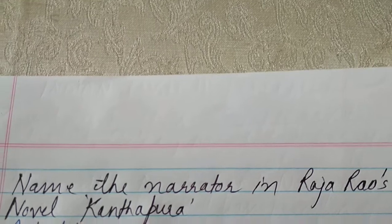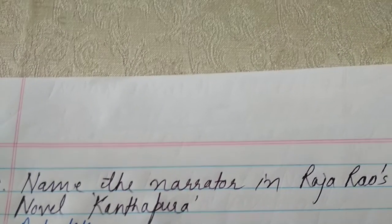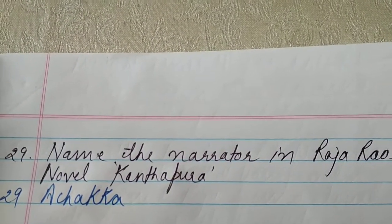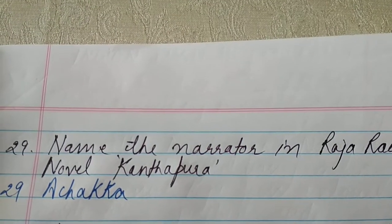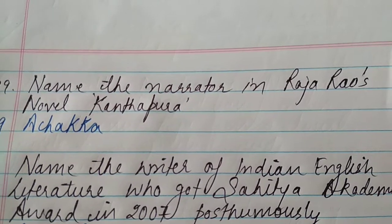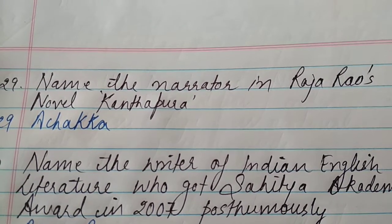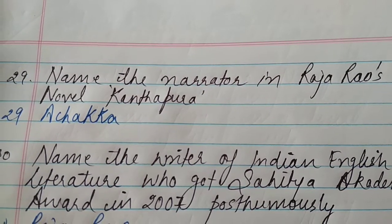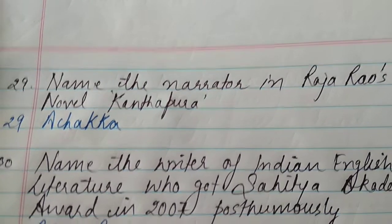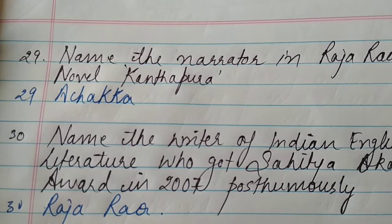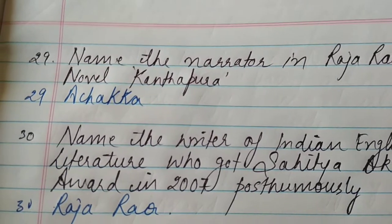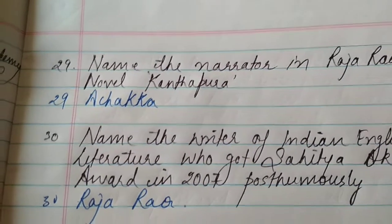Name the narrator in Raja Rao's novel 'Kanthapura' — the narrator was Achakka, who was a Brahmin and told the story of Moorthy, who was also a Brahmin. The Sahitya Akademi Award in 2007 was given to Raja Rao posthumously, as Raja Rao died in 2006.